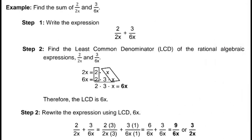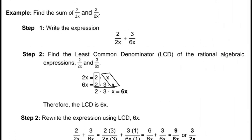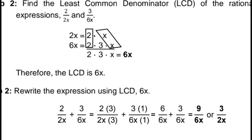Example: find the sum of 2 over 2x and 3 over 6x. Step 1, write the expression: 2 over 2x plus 3 over 6x. Step 2, find the least common denominator or LCD of the rational algebraic expressions 2 over 2x and 3 over 6x. We're going to find a number that can divide both 2x and 6x. That number will be 6x, since 6x can divide 2x and also divide 6x itself. Therefore, the LCD here is 6x.